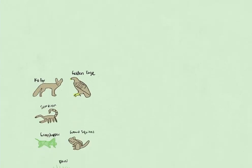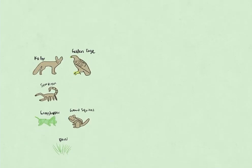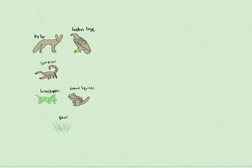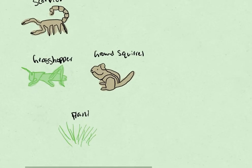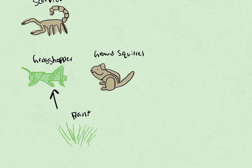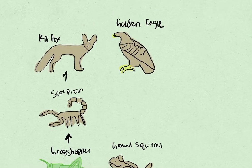So let's take a look at an example. This is similar to the example that we had before. I'm going to draw out all the lines here. So the energy goes from the plant to the grasshopper, to the scorpion, to the kit fox.